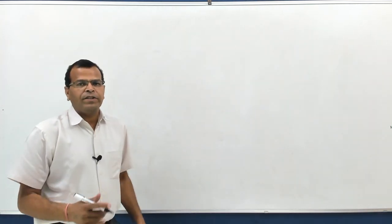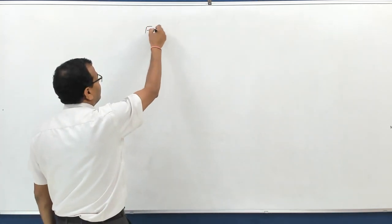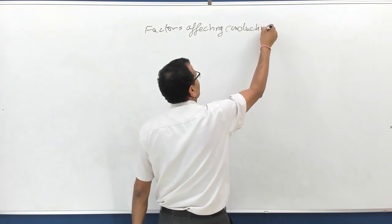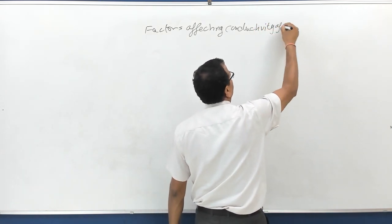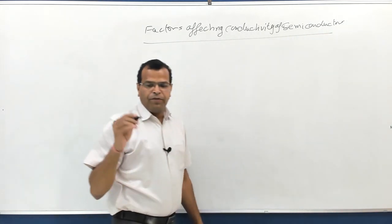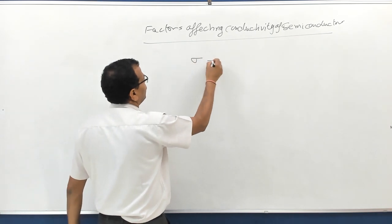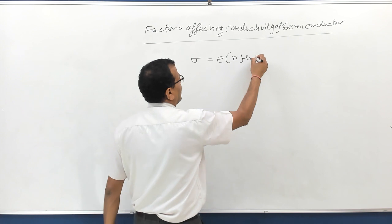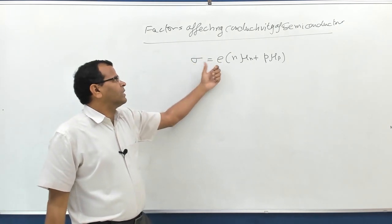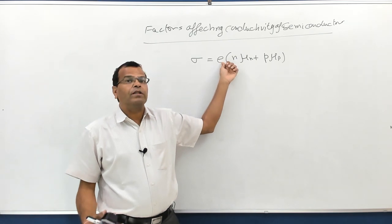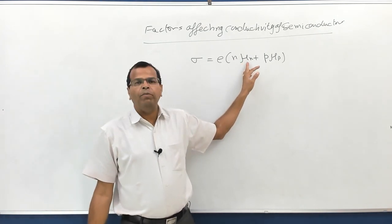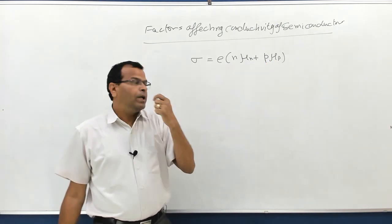Now let us see the factors affecting the conductivity of semiconductors. The conductivity of semiconductors is given by sigma equal to e times (n·μn + p·μp). The factors on which conductivity depends are: e, which is a constant 1.6×10⁻¹⁹; n, the concentration of electrons; μn, the mobility of electrons; p, the concentration of holes; and μp, the mobility of holes.